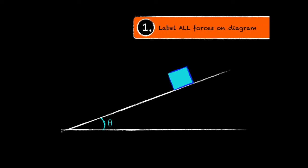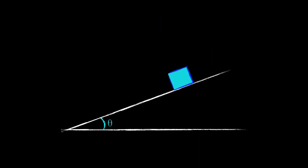The first thing that we have to do is label all the forces on the diagram. So the obvious force is the weight, and that's just equal to the mass of our object times g, the gravitational constant.